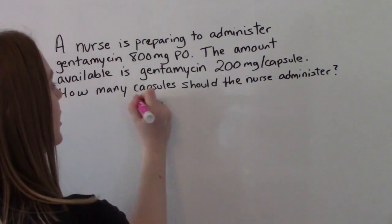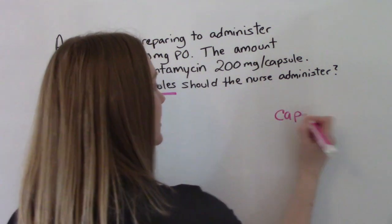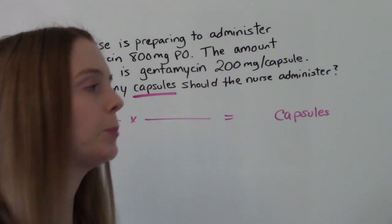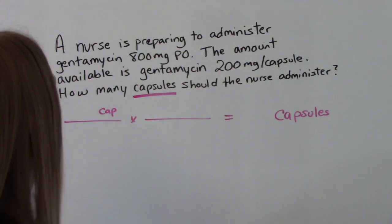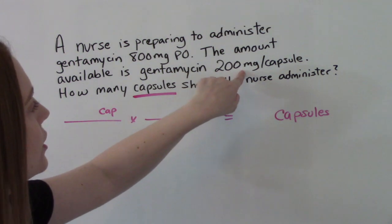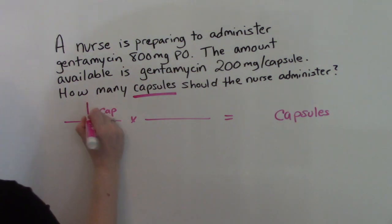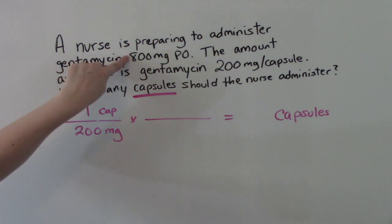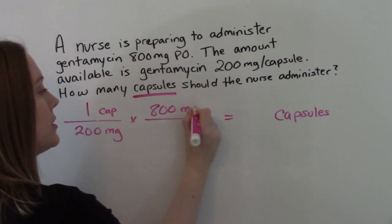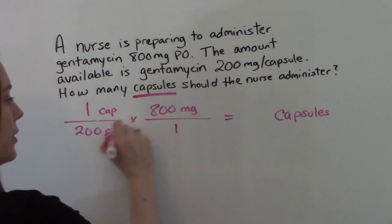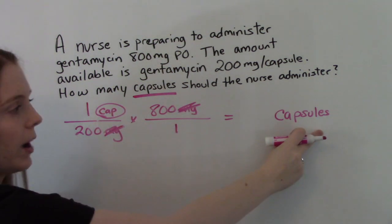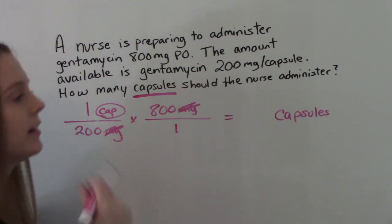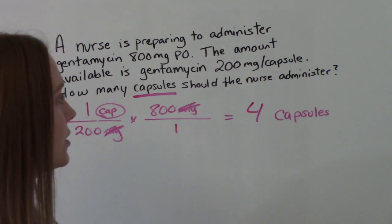What are we looking for in our answer? We're looking for capsules, so we'll put capsules at the end. Since it's what we're looking for, it needs to be in our numerator. The problem tells us 200 mg is equivalent to one capsule, so we put 1 capsule in the numerator and 200 mg in the denominator. We want to give 800 mg, so we put 800 mg in the numerator so the milligrams cancel, leaving us with just capsules. Do the math: 1 times 800 divided by 200 times 1 gives us 4 capsules.